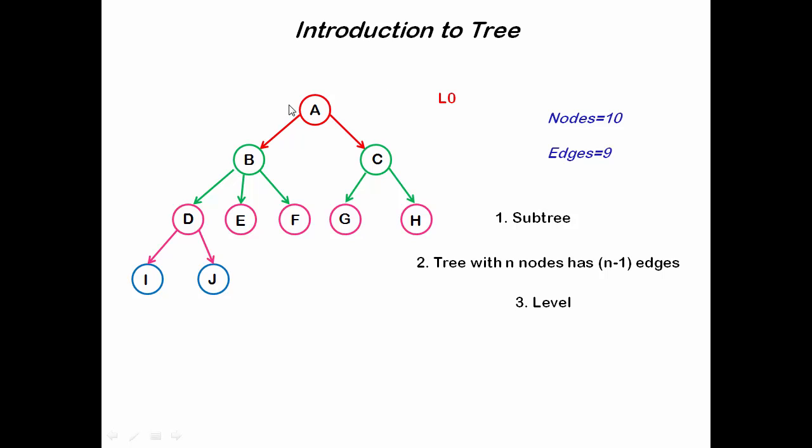Now see here, A is the parent of B and C and A's level number is 0. So B and C's level number will be 1, then level number 2, and then level number 3.